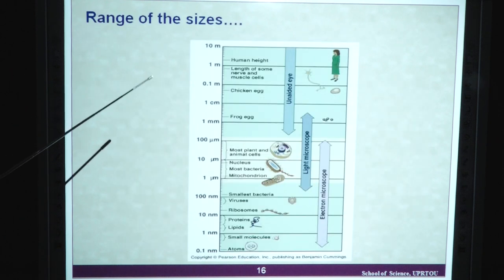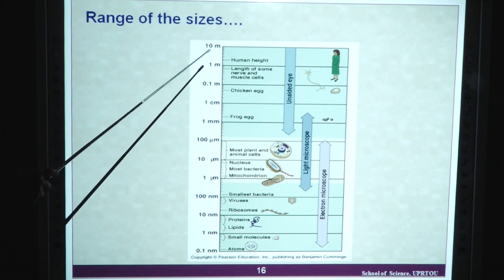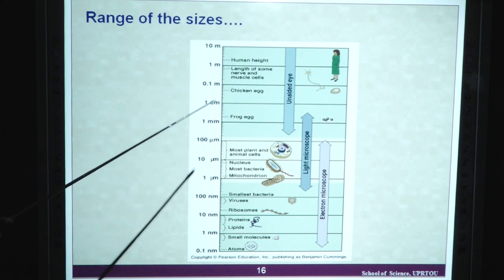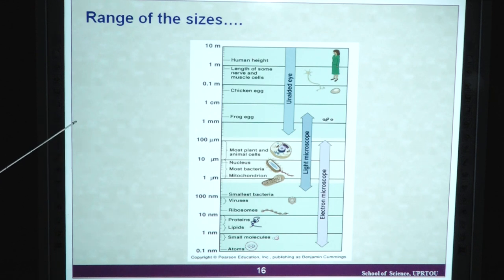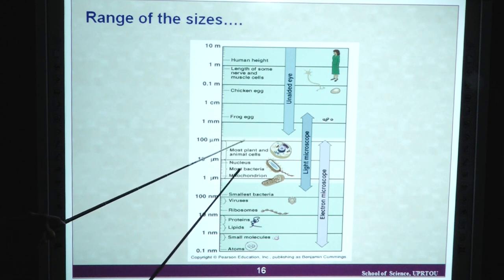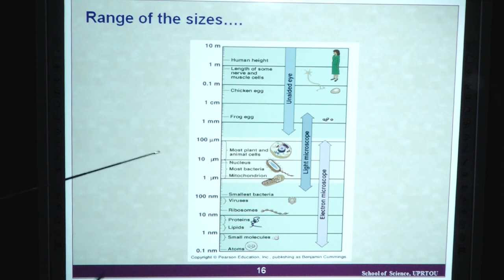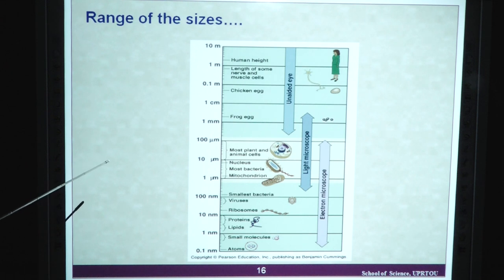Here we can see human height and the length of nerve and muscle cells. We have different microscopes like the light microscope for the visualization of nucleus, most bacteria and mitochondria, and we have the electron microscope for the visualization of very small things like viruses, cells, ribosomes, proteins, lipids, small molecules and atoms.